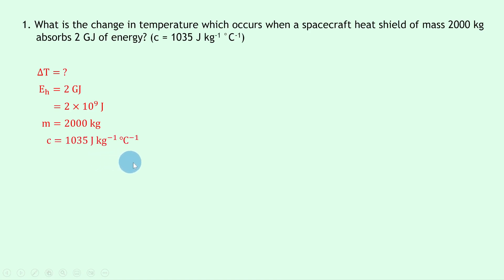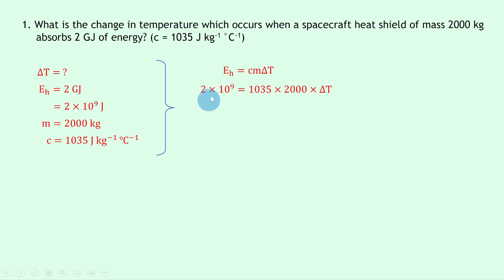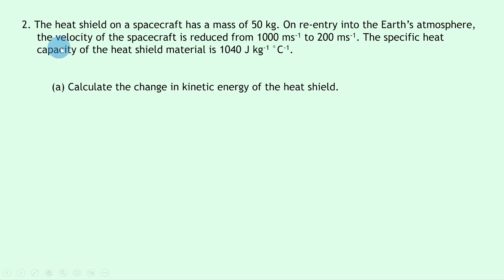We also have the mass m = 2000 kilograms and the specific heat capacity c = 1035 joules per kilogram per degree Celsius. Writing down the equation for specific heat capacity: E_H = cmΔT. Substituting in the numbers: 2×10⁹ = 1035 × 2000 × ΔT. To get ΔT on its own, divide the left hand side by 1035 × 2000, and you should get ΔT = 966 degrees Celsius.